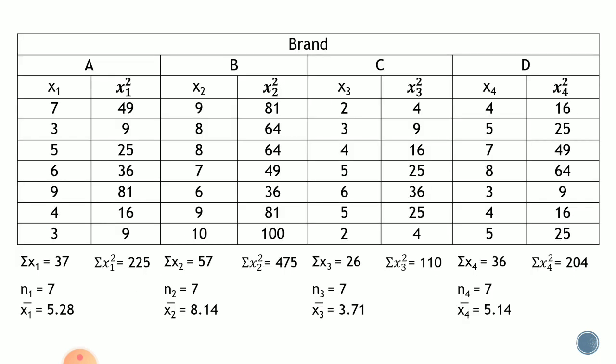We use the same data from the analysis of variance example. We have four brands of vitamin C: brands A, B, C, and D. Under brand A, the sample size is 7 and the mean is 5.28. Under brand B, the sample size is 7 and the mean is 8.14. Brand C has a sample size of 7 and a mean of 3.71. Brand D has a sample size of 7 and a mean of 5.14.